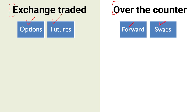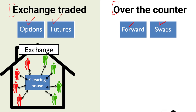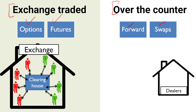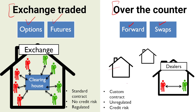Over the counter contracts include forward contracts and swaps, where you directly deal with the other party. In exchange traded contracts, the contracts are cleared through exchanges, they are standardized, and the exchange provides a guarantee with no default risk. In over the counter contracts, there is a default risk, traders deal directly, contracts are custom and unregulated, and credit risk is present. Nifty, Bank Nifty, and gold derivative contract sizes are all standardized when exchange traded.